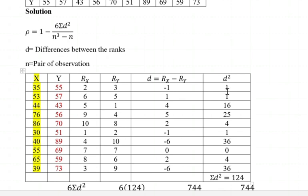The last column is D squared, which simply represents whatever values we have calculated for D, squared. So negative 1 squared gives us 1. 1 squared gives us 1. 4 squared gives us 16. 5 squared gives us 25. 2 squared gives us 4. All the way up to negative 6 squared, giving us 36. This is the column of interest to us, and therefore we need to get the sum, which will be used as summation D squared. When you add them all, you get the answer 124.